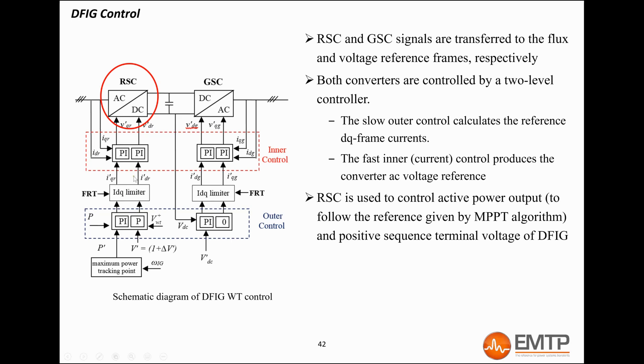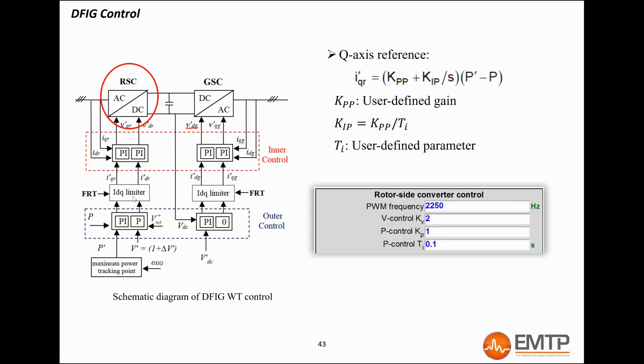The inner loop, which is the fastest one, produces the Q-axis voltage reference to follow the Q-axis current reference produced by the outer loop. Before being used by the inner loop, the current reference is limited by the IDQ limiter block, so the converter does not exceed its current capability, which could cause hardware damage. The limiter function will be explained later on in this presentation. The gains of the outer loop are calculated based on user-defined parameters, as shown here. The typical time constant of this loop is 0.1 seconds.